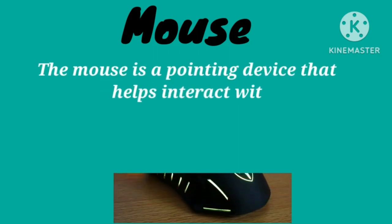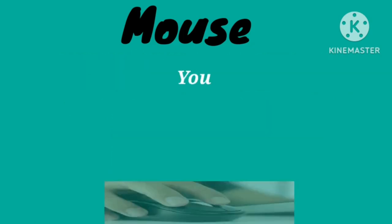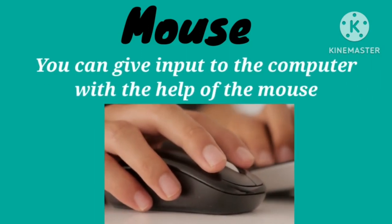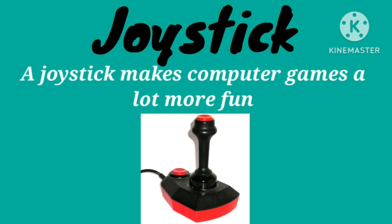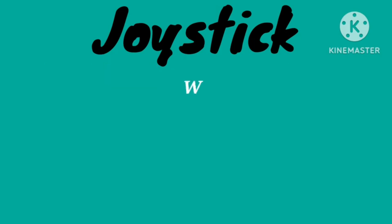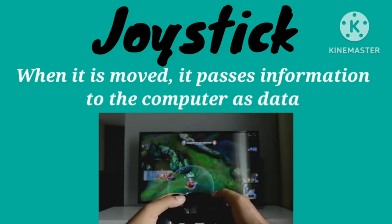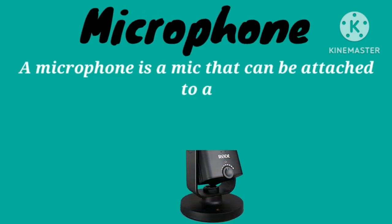Mouse: the mouse is a pointing device that helps interact with the computer through a process called point and click. You can give input to the computer with the help of the mouse. Joystick: a joystick makes computer games a lot more fun; when it is moved, it passes information to the computer as data.